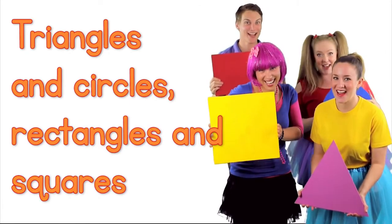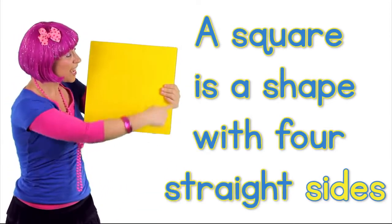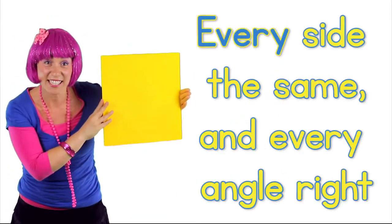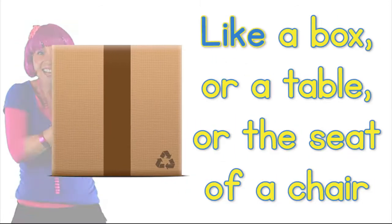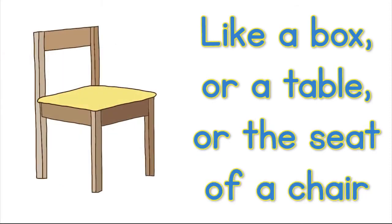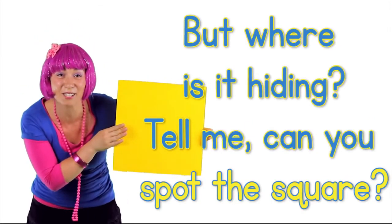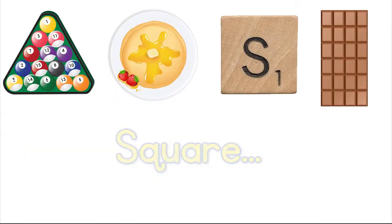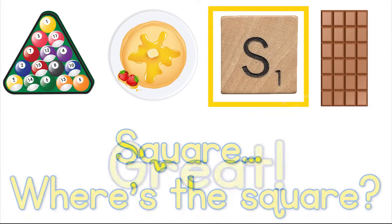A square is a shape with four straight sides. Every side the same and every angle right. Like a box, or a table, or the seat of a chair. But where is it hiding? Can you spot the square? Square! Where's the square? Great!